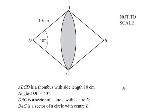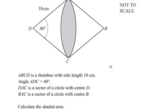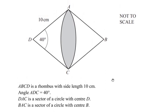Hello and welcome to my channel. In this video, we are going to solve an example from mensuration. ABCD is a rhombus with side length 10 centimeters. Angle ADC is given as 40 degrees. DAC is a sector of a circle with center D, and BAC is a sector of a circle with center B. Calculate the shaded area. So here we have to find out what is the area covered by this shaded region.